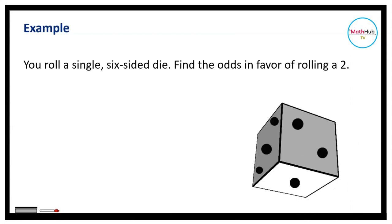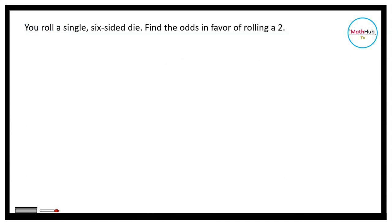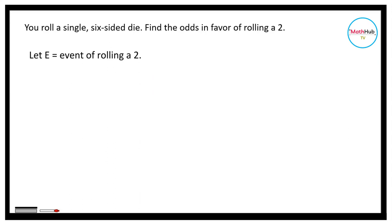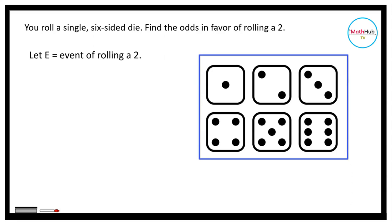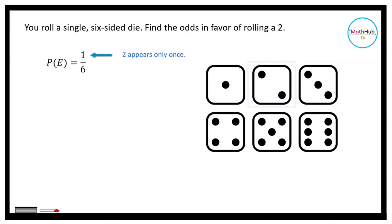For example, you roll a single six-sided die. Find the odds in favor of rolling a 2. If E represents the event of rolling a 2, we need the probability of E occurring and the probability of E not occurring. The set of equally likely outcomes is {1, 2, 3, 4, 5, 6}. E is the event of rolling a 2, so the probability of E is 1 over 6. The probability of not E is computed by subtracting 1/6 from 1, giving 5 over 6.